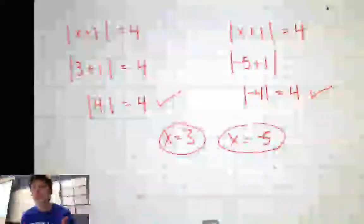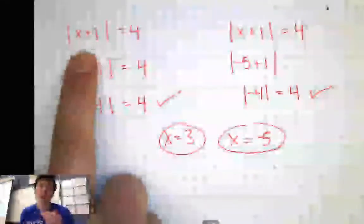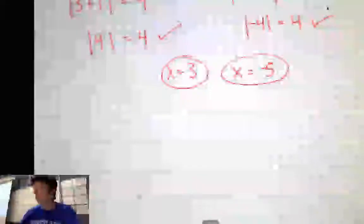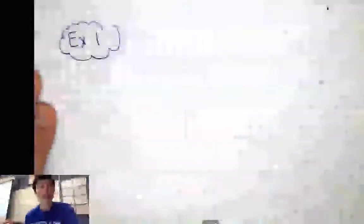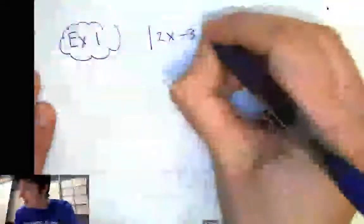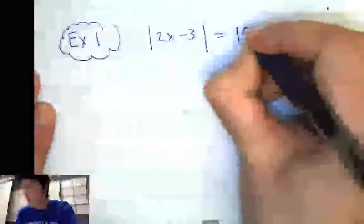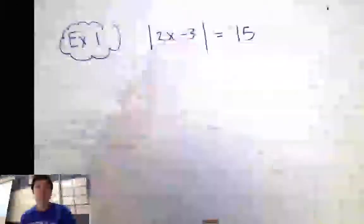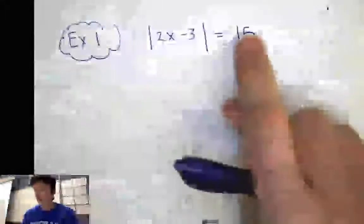We want a way to find these two answers that doesn't require guessing. We want some steps to follow, because these equations are going to get much harder. So let's go through how we would do these equations by hand with a few extra steps. Example 1: solve for x with the equation absolute value of 2x minus 3 equals 15. That means inside this absolute value, I can either have a positive 15 or a negative 15 to make this true, so I'm going to split this problem up into two options.